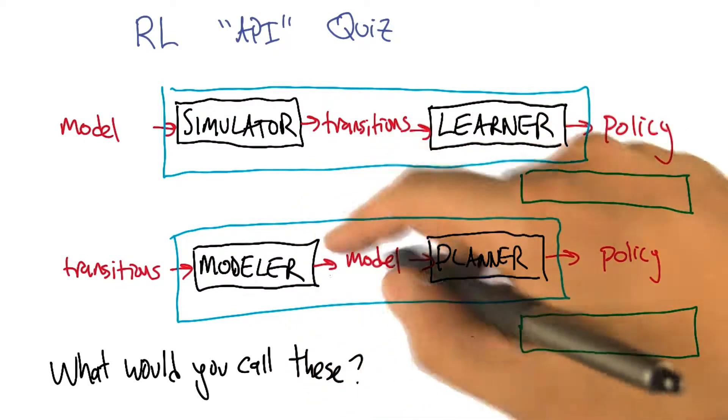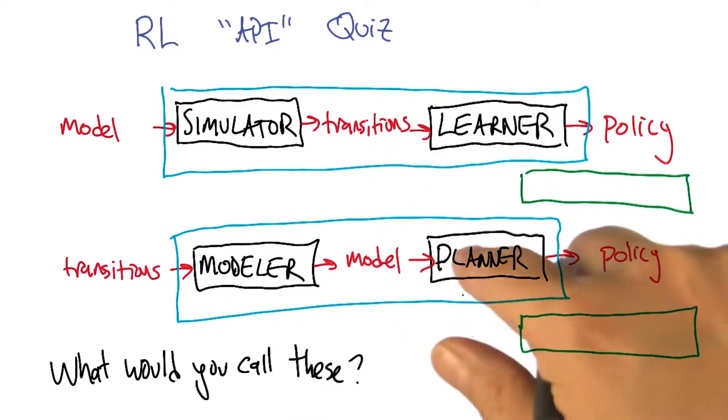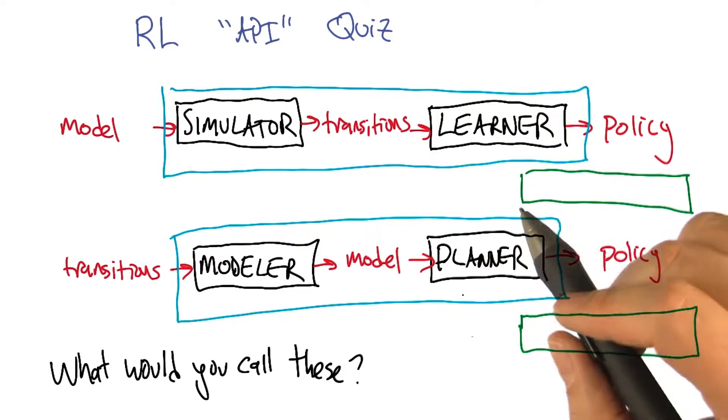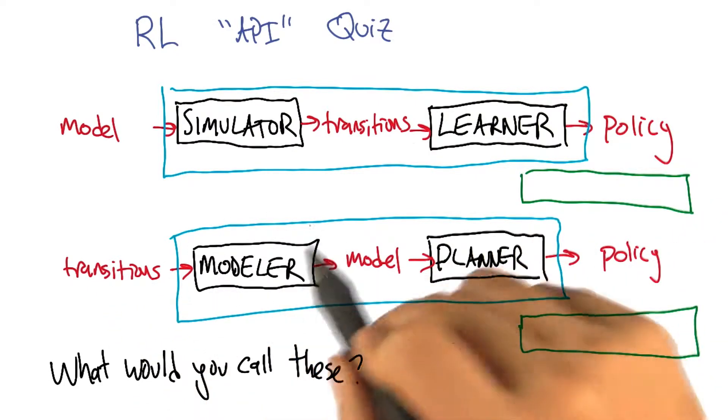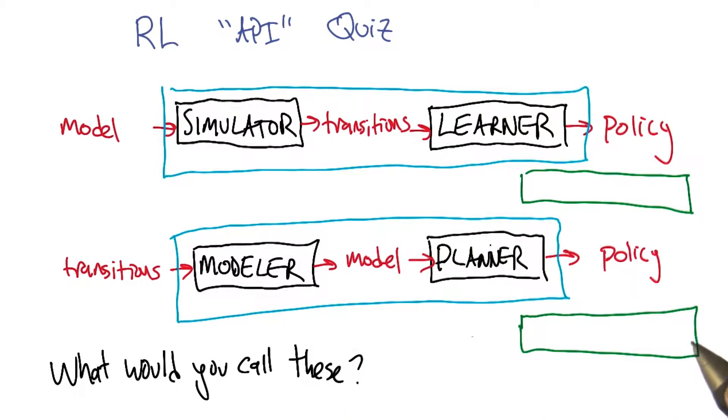All right, Charles. So what would you call, let's think about this bottom one first. Okay. So what would you call an approach to reinforcement learning that builds a model and then plans with it? A planner?